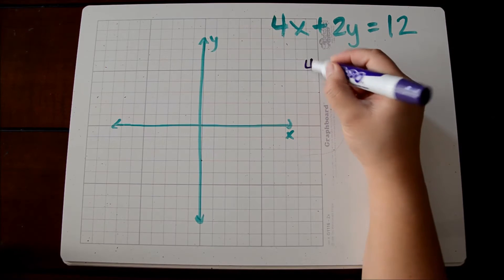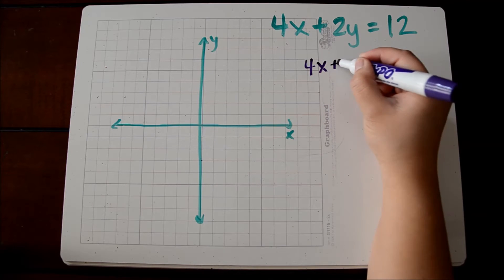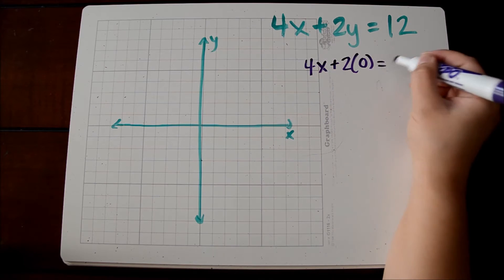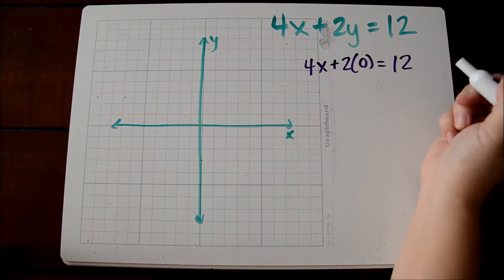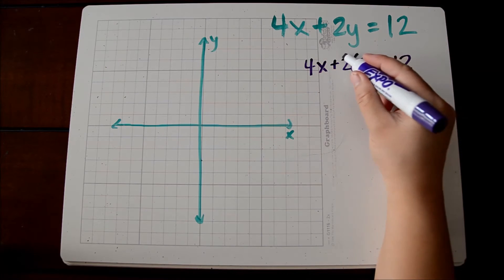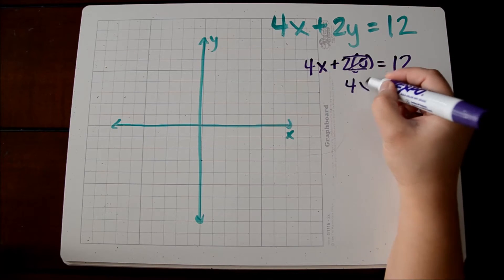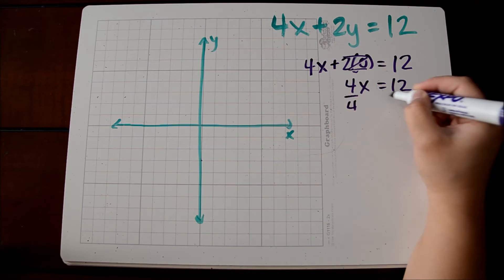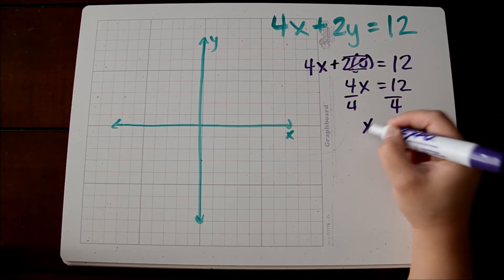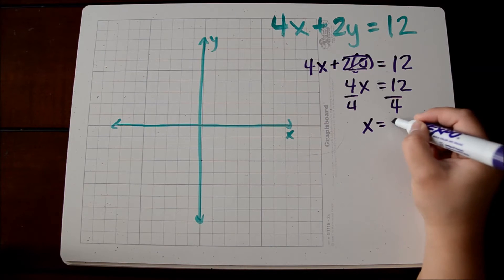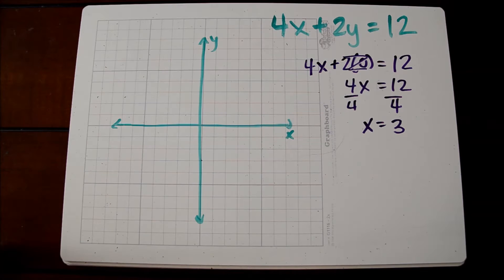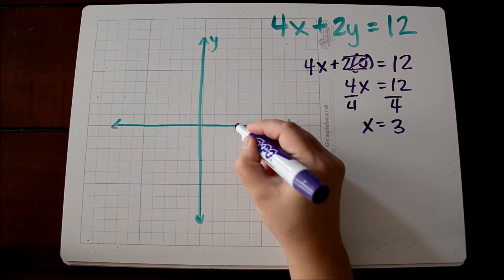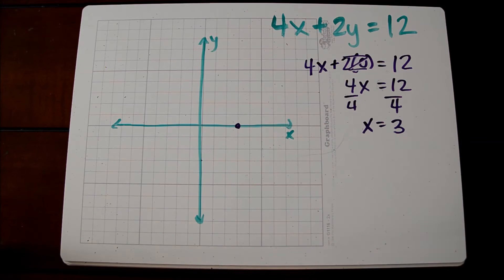The first thing we're going to do is substitute in 0 for y to find our x-intercept. Anything times 0 is 0, so we're left with 4x equals 12. When we divide, we get x is equal to 3. So that means we have an x-intercept at (3, 0) because the y-value is 0.